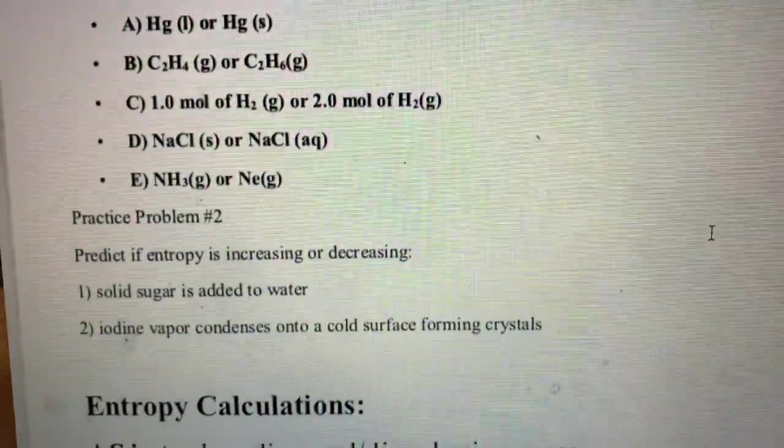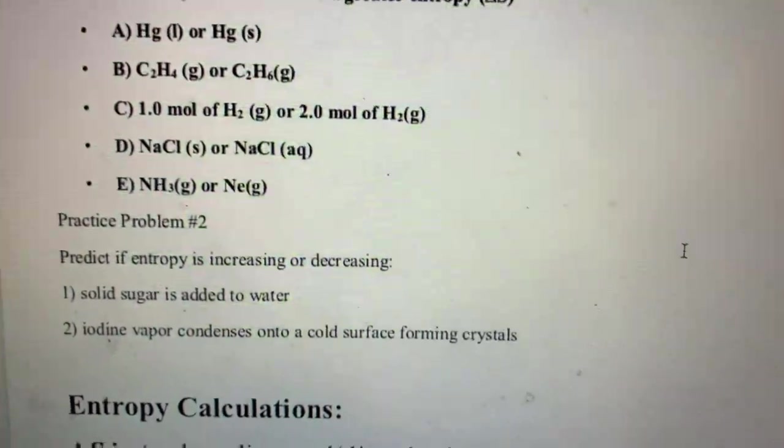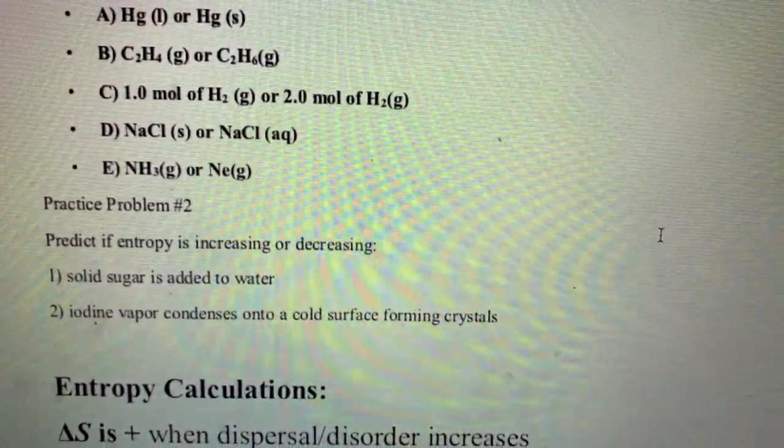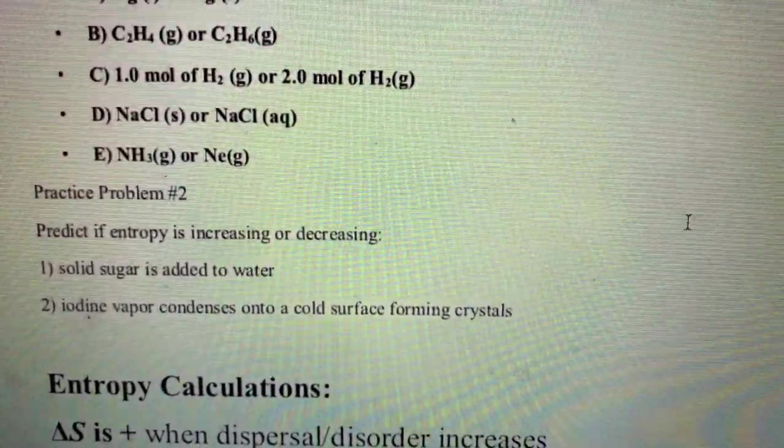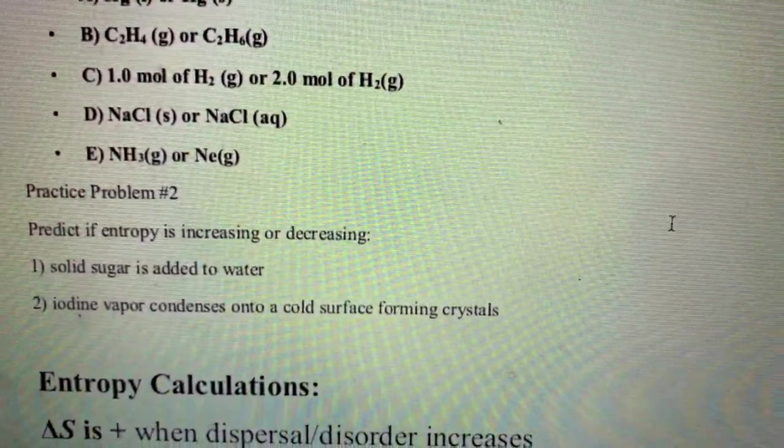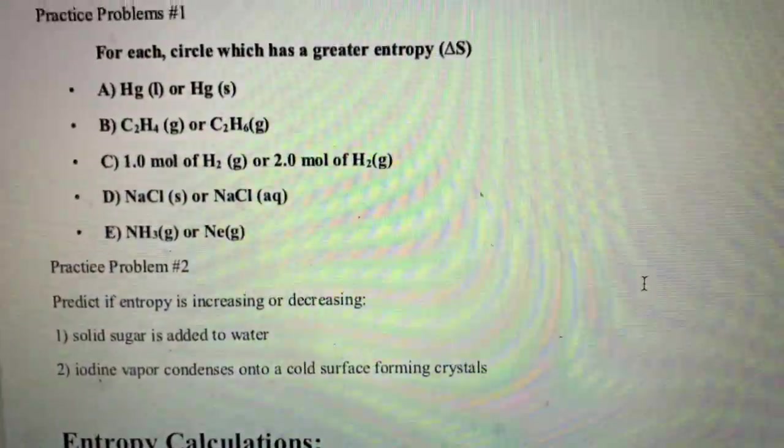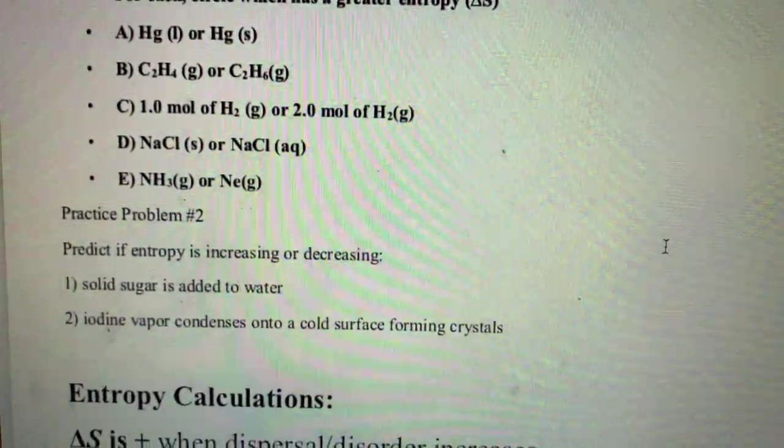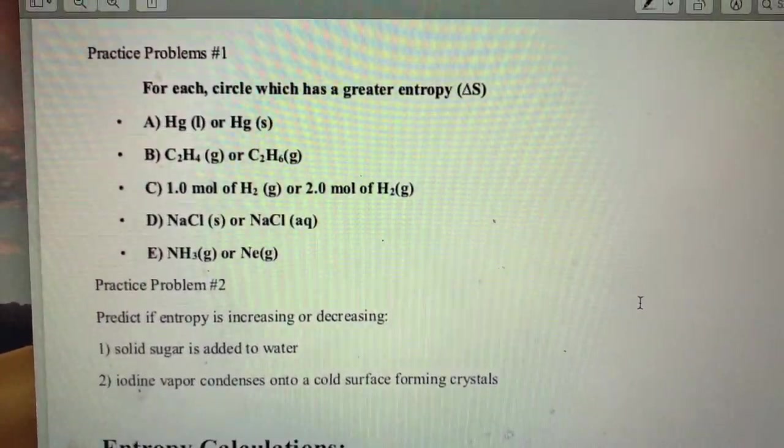Number two: iodine vapor condenses onto a cold surface forming crystals. We could also call this depositing because we're going straight into a solid. Iodine vapor is a gas and then it is turning into a solid, so you are making that more ordered, so therefore the entropy is going to go down.